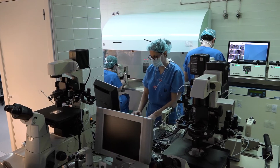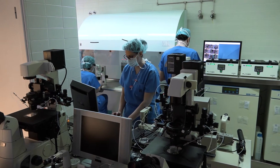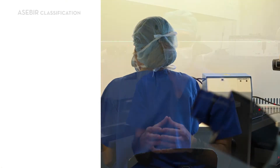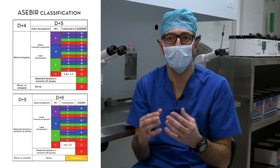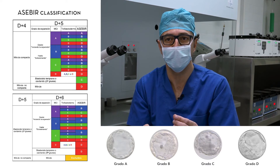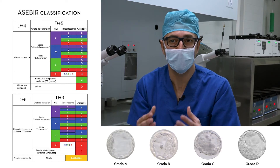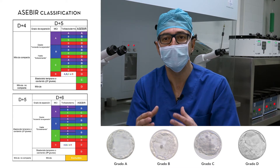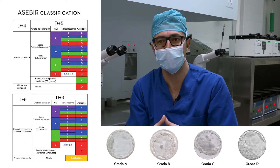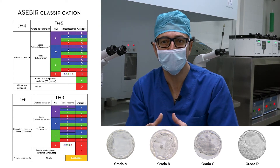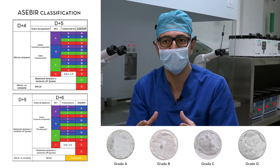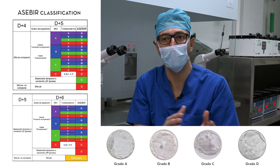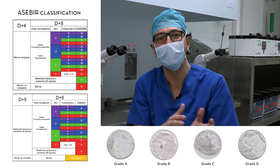The Spanish Association for the Study of Reproduction Biology classifies blastocysts into four different categories — A, B, C, and D — based on the characteristics of the ICM and trophectoderm, and their expansion. It is also a dynamic classification system that takes embryo evolution into account on day four and/or five of development.